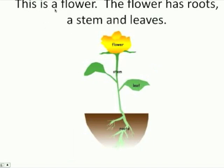This is a flower. The flower has roots, a stem, and leaves. These are the roots. This is the stem. This is a leaf. These are leaves.